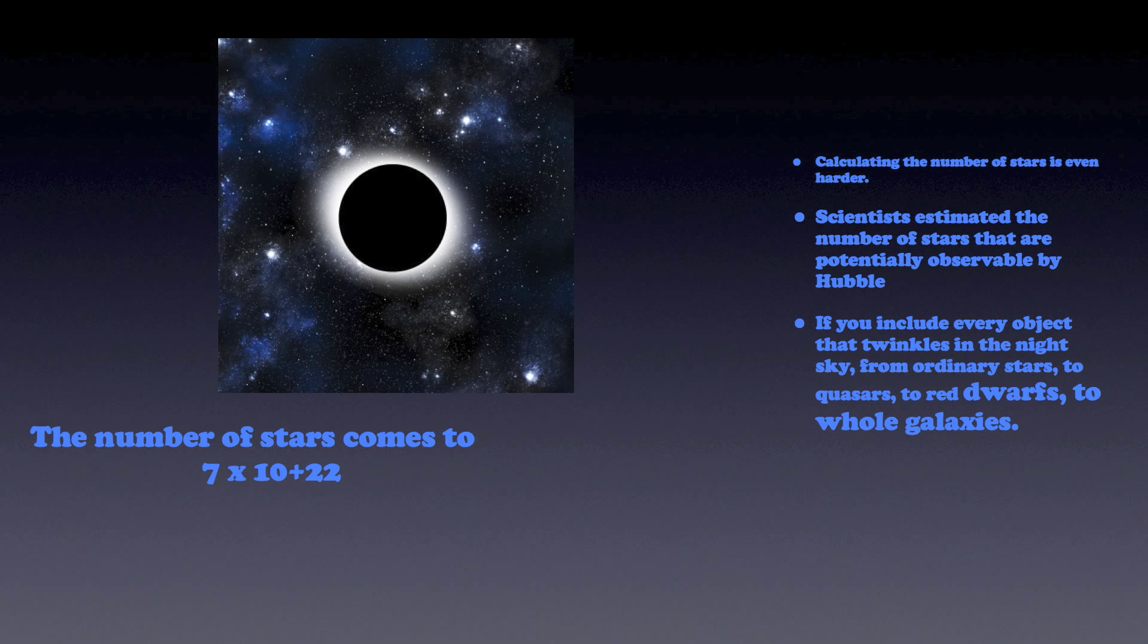If we opt to limit our scope to the number of stars that are observable with the naked eye on a clear night from earth, then the grains of sand will have an easy victory. Even with minimal light pollution, we are likely to make out no more than a few thousand stars.